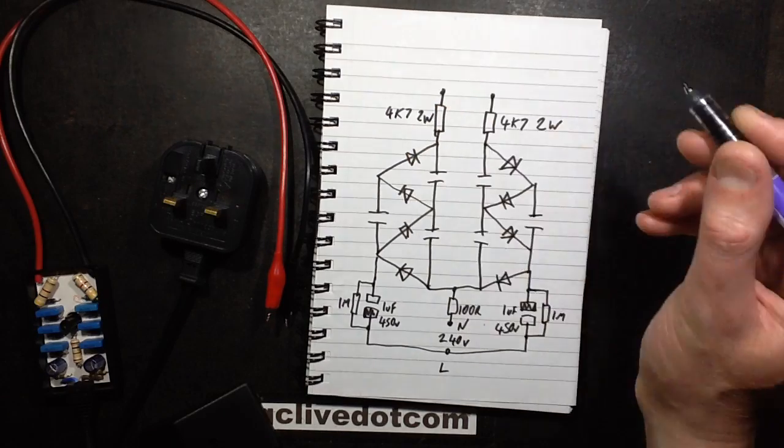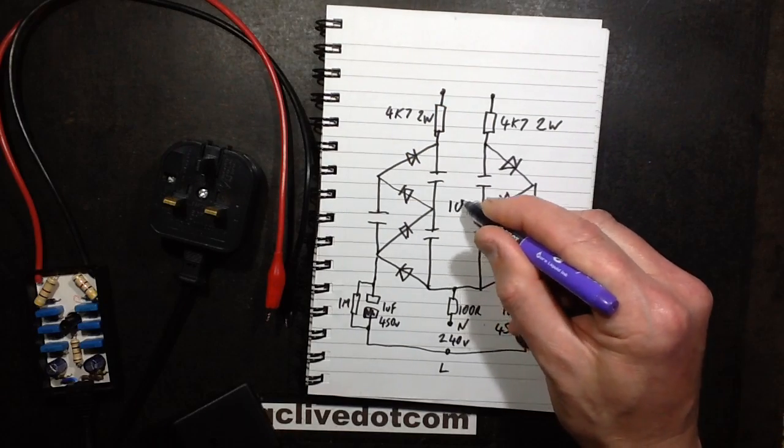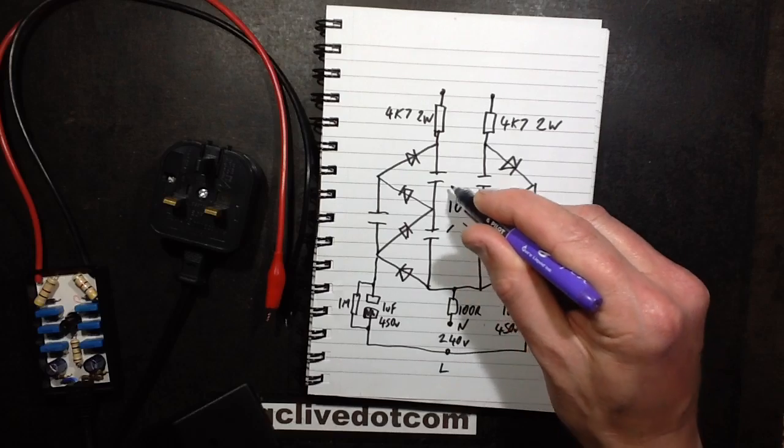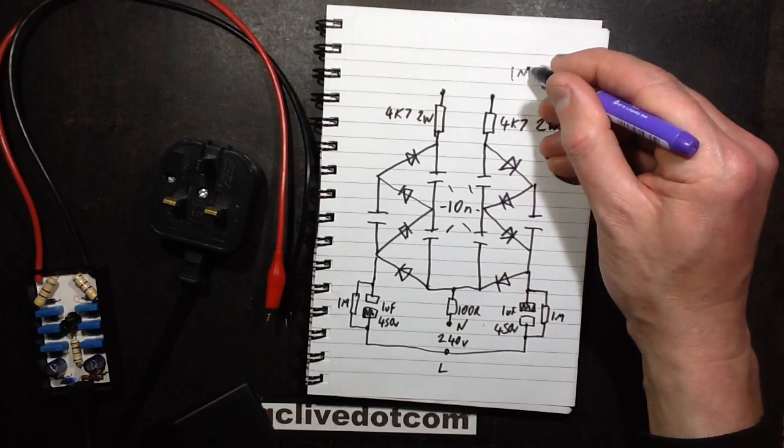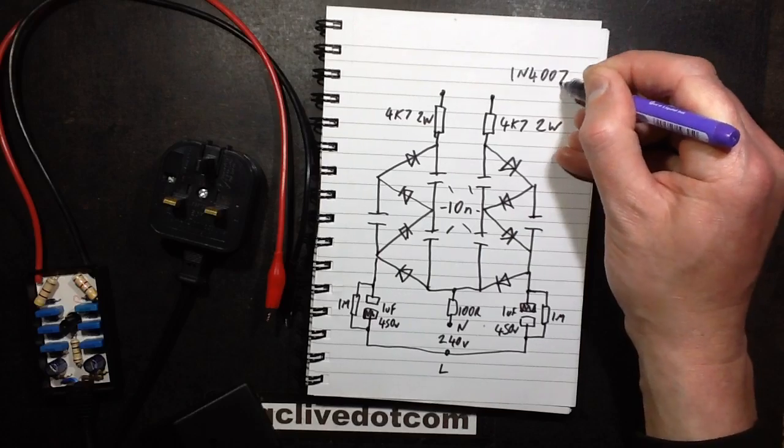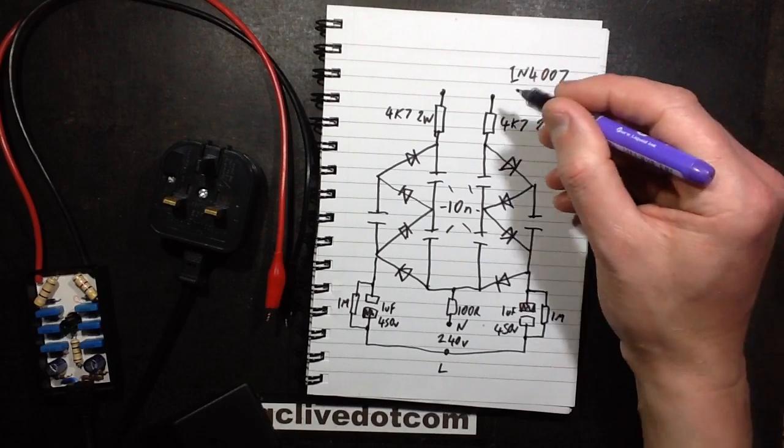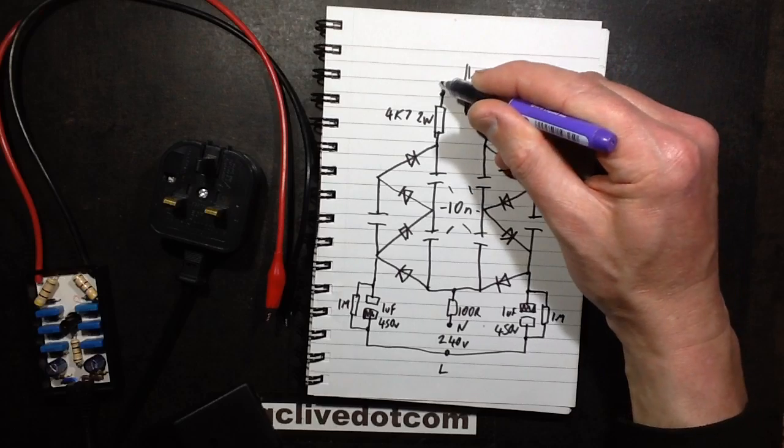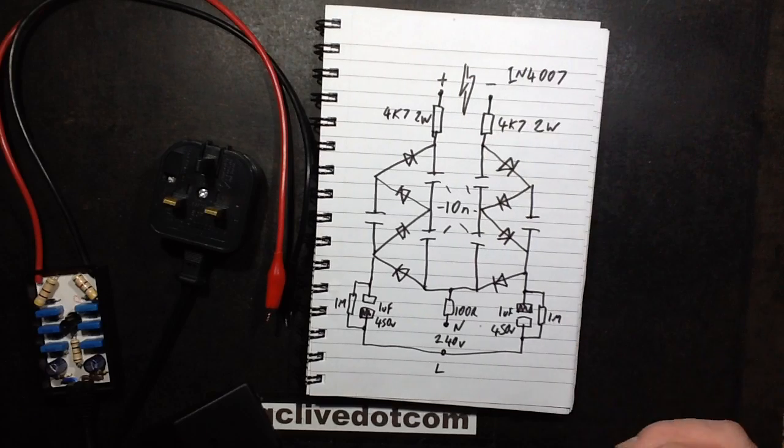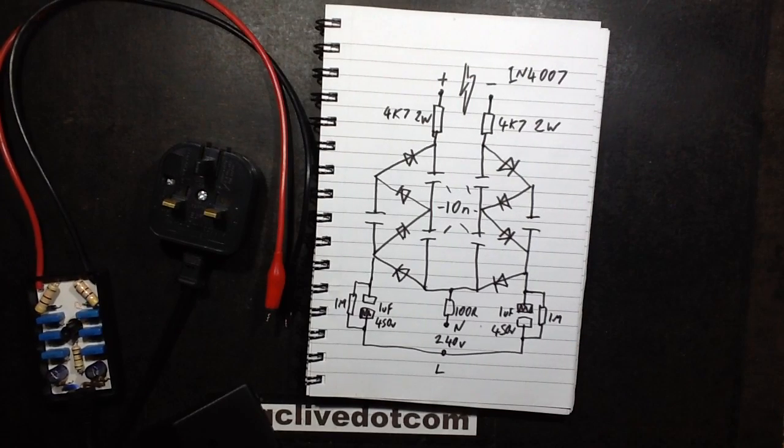They are 4.7k and I use 2 watt resistors, 4.7k 2 watt. All the capacitors are 10 nanofarads in that area. The diodes are 1N4007. And that's the high voltage there, the positive and the negative current limited. That is the circuit. Isn't that just breathtakingly simple?